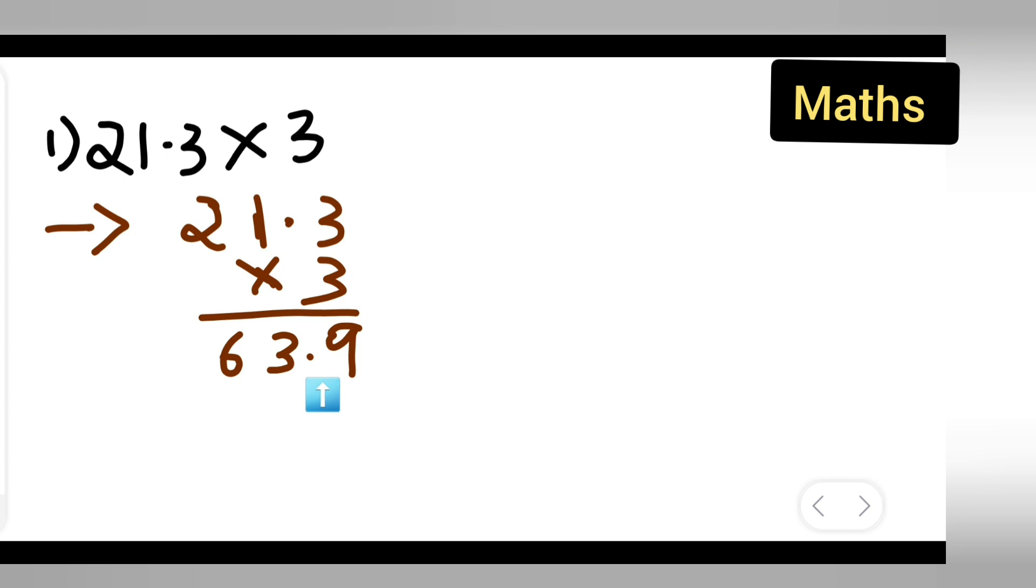There is one more method you can use. You can either do it like this: 213 upon 10 multiplied by 3. So what you would do is 213 multiplied by 3. I have removed the decimal point and will multiply by 3.